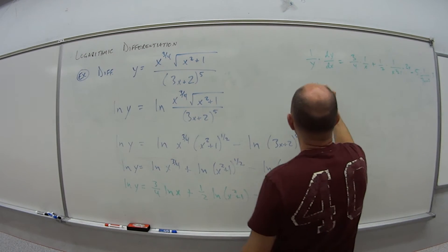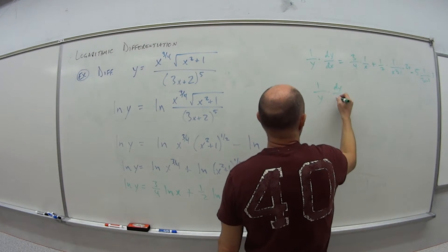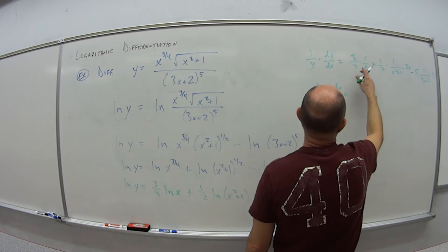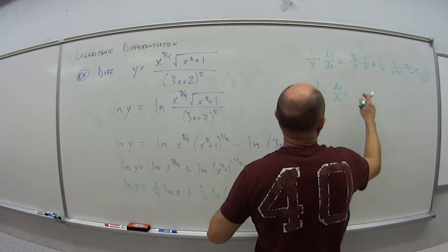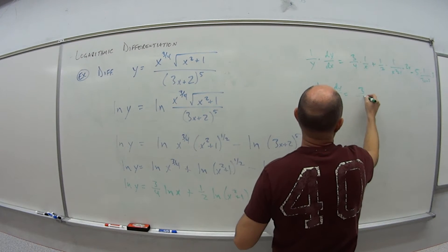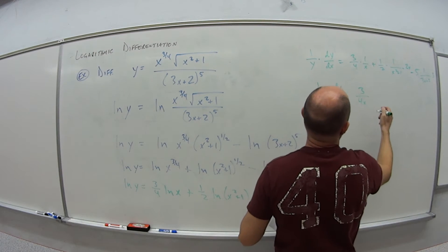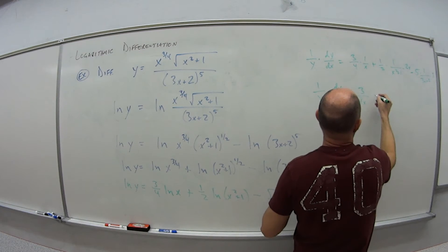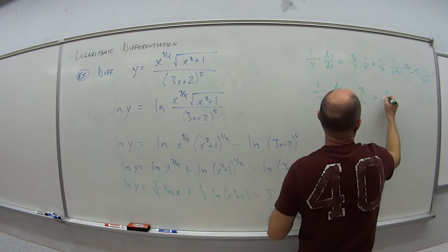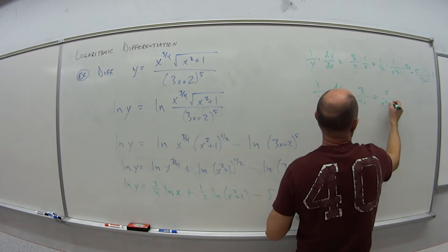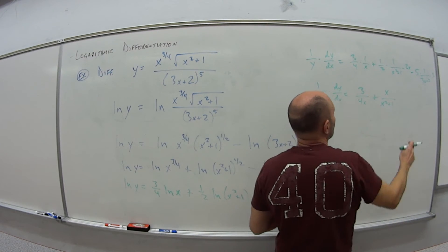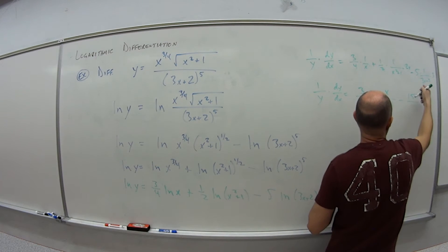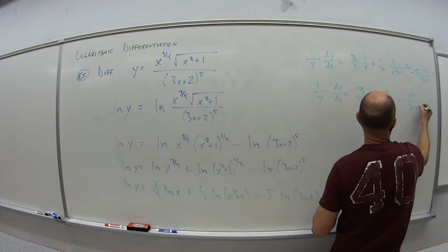So I get 1 over y dy dx is equal to, now just combine these pieces, so I have 3 over 4x. Here the 2's will cancel out, so I get plus x over x squared plus 1. And then 5 times 3 is 15, so minus 15 over 3x plus 2.